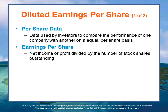Diluted earnings per share equals net income divided by the diluted number of shares outstanding. Diluted shares include potential shares that could be issued due to the exercise of stock options — incentive stock options that employees or senior management might have — or the conversion of certain types of preferred debt that might be convertible into common stock. So diluted means you assume all shares that could possibly be claimed through conversions are included in the calculation.